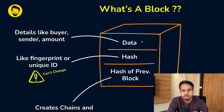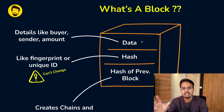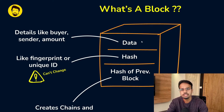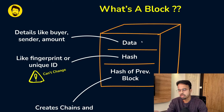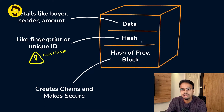Now let's look at what exactly is inside each of these blocks and how they are connected. A block has three main components: one is data, which includes details like who is the buyer, who is the sender, what is the amount sent. Second is hash — think of it as a digital fingerprint or unique ID which cannot be changed. And another one is the hash of the previous block, which is very important — this is how each of the blocks are connected with one another.